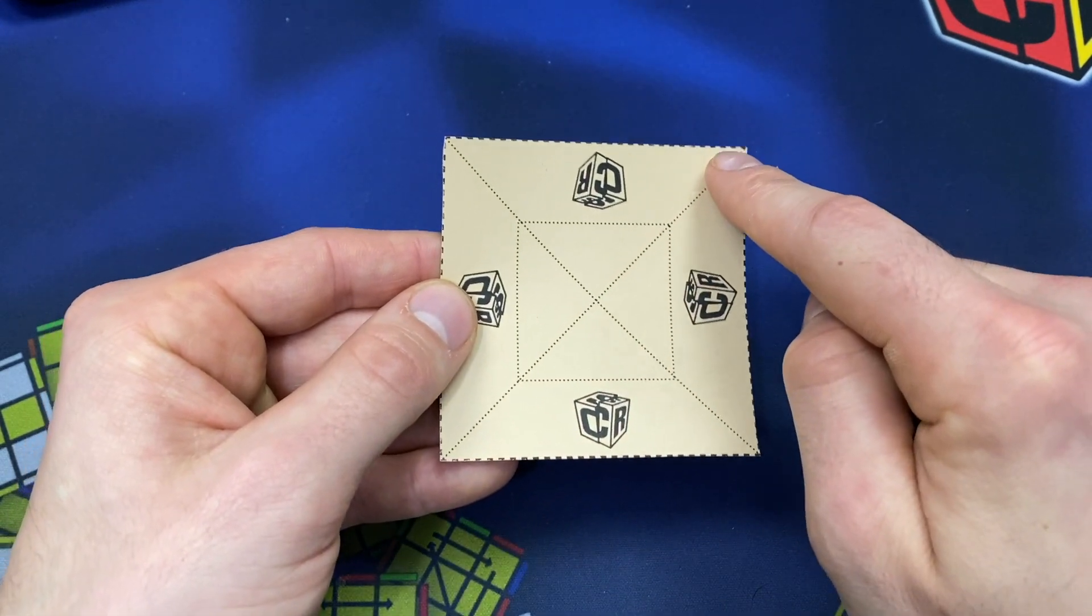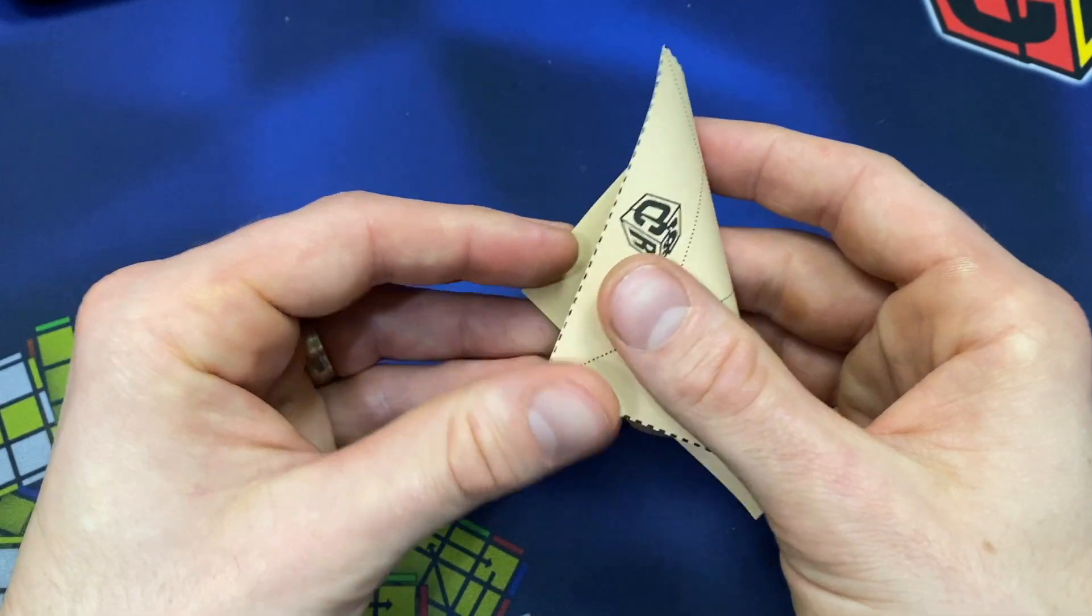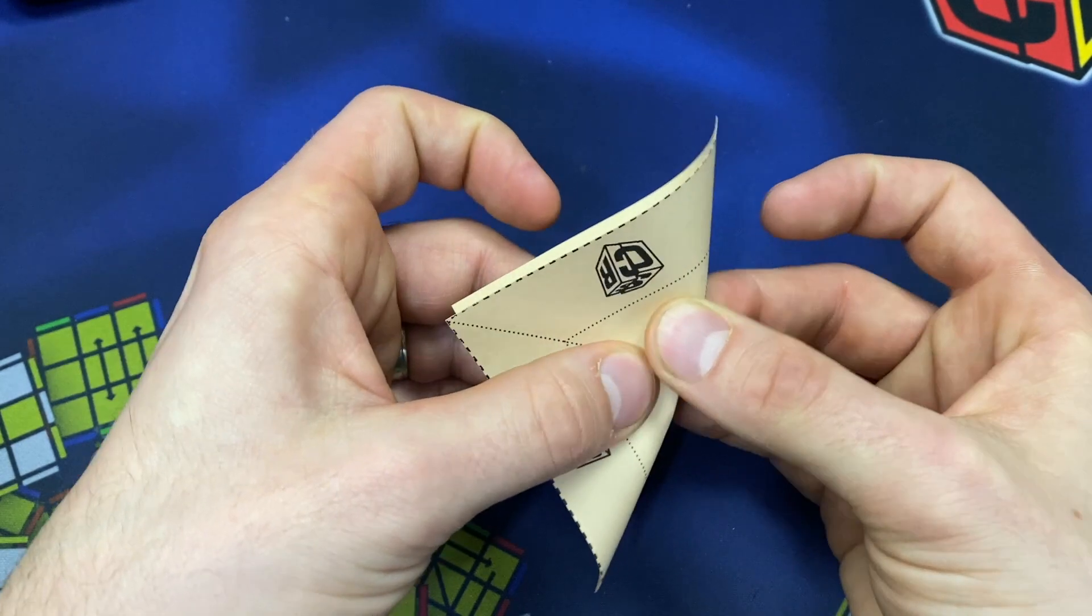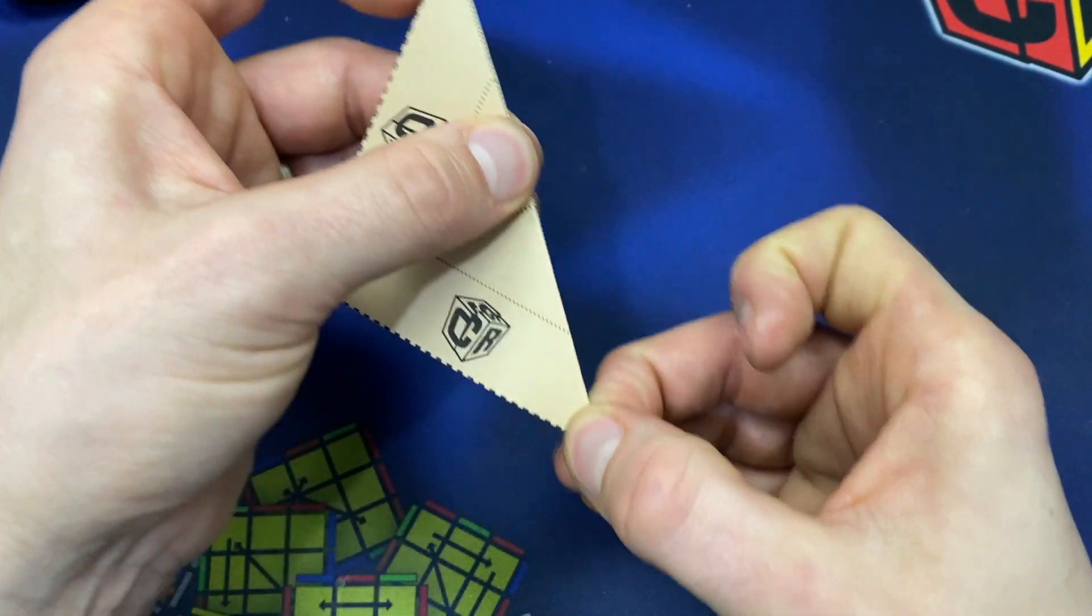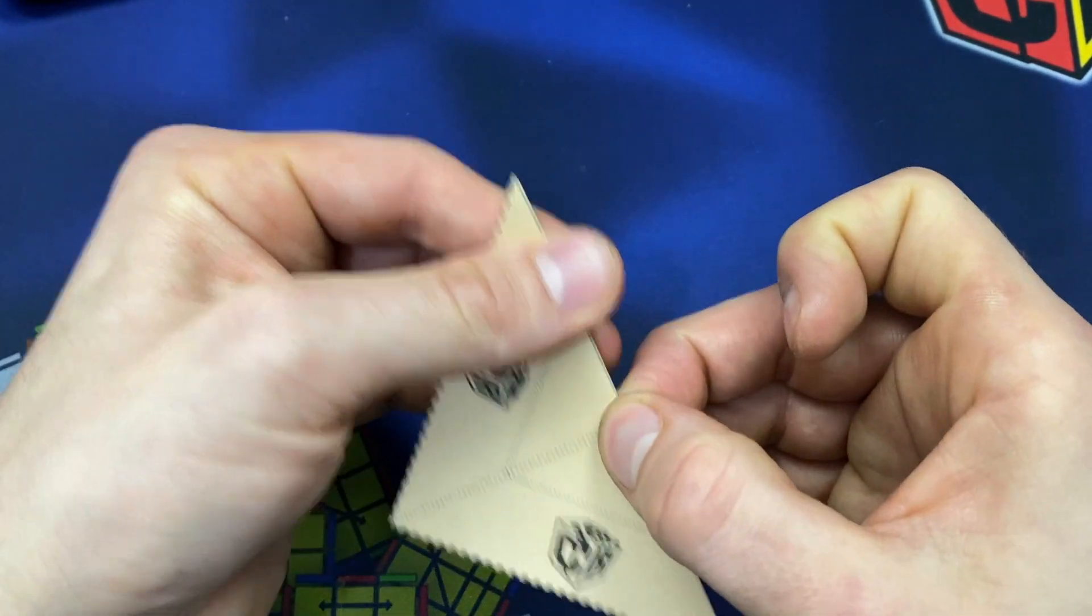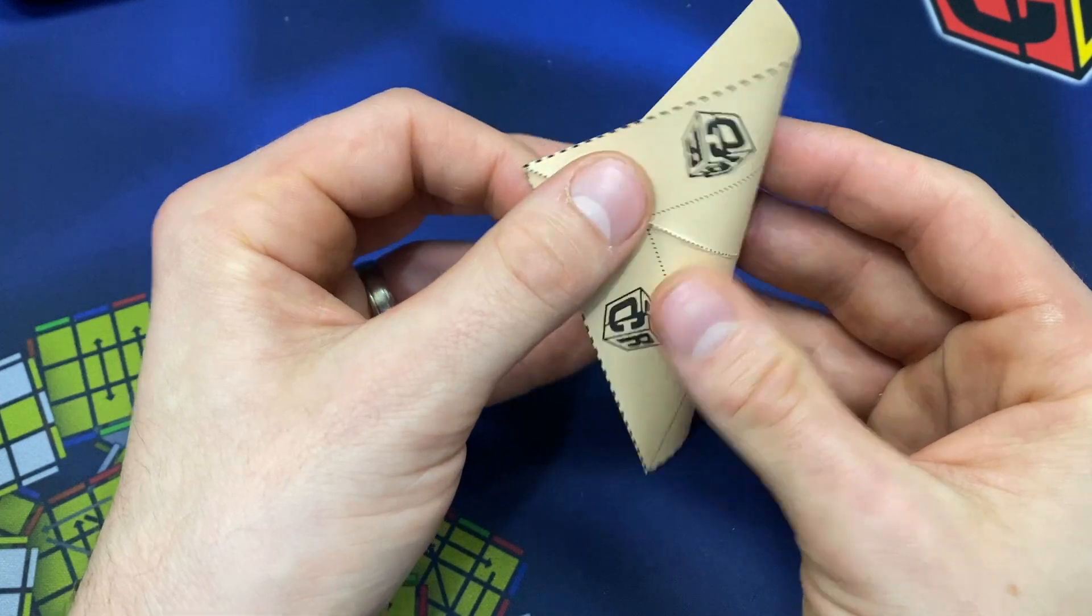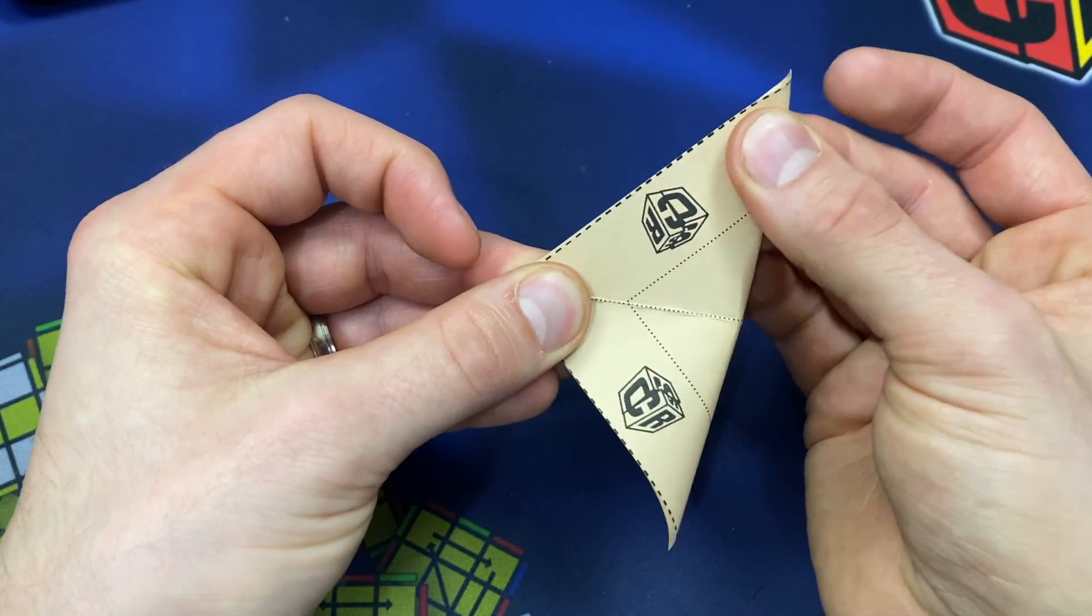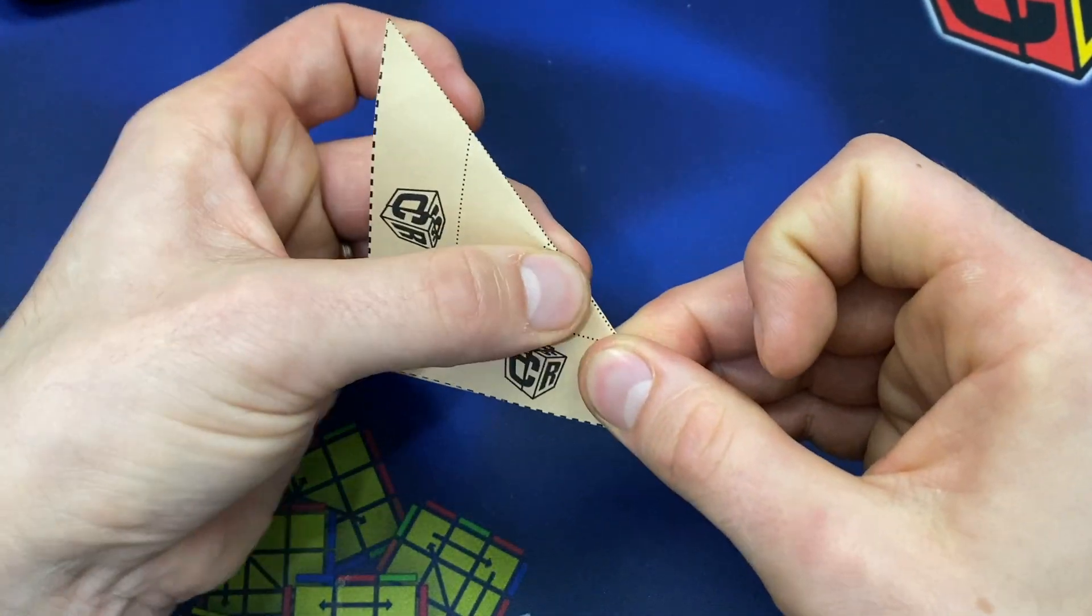First off, you want to crease along these lines, and the first crease you're going to make will keep having the outside visible. I'm going to just use the word outside and inside, meaning the visible and not visible sections, to help identify which way to crease. So we crease the outside from corner to corner.